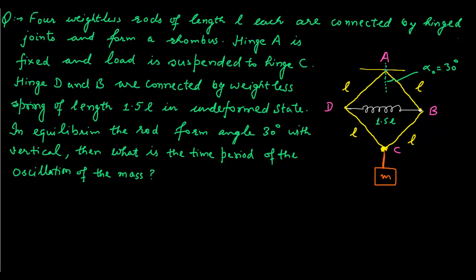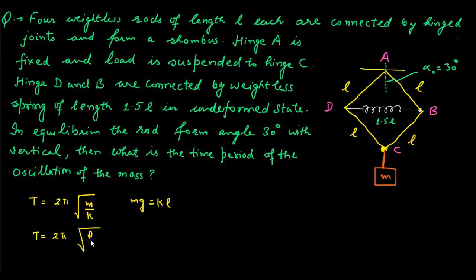To solve this problem, we first identify the underlying concept, which is simply the time period as calculated in the spring pendulum. We use the formula T = 2π√(M/K), where M is the inertia factor and K is the spring constant. In solving the spring pendulum, during equilibrium we write Mg = KL where L is the equilibrium length, and substituting M gives T = 2π√(L/g).